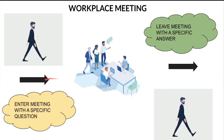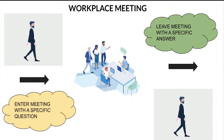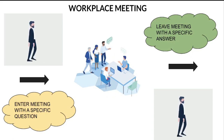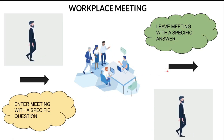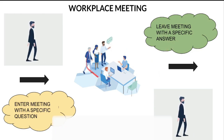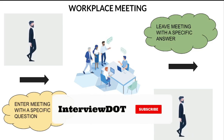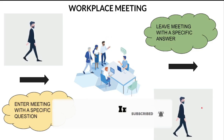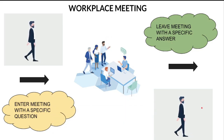I enter any meeting discussion with a specific question, and once the discussion and meeting are over, I ask myself: did I get the answer for this specific question? If I don't get a specific answer out of the meeting, then I do a follow-up meeting to get a specific answer. This is one small technique which helped me to improve my office meetings.